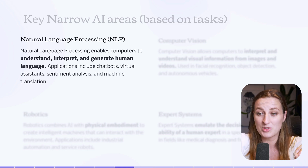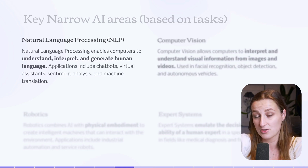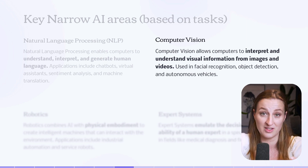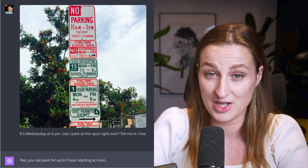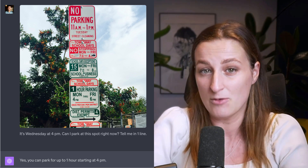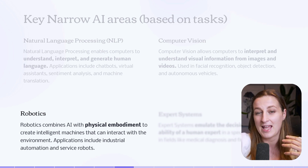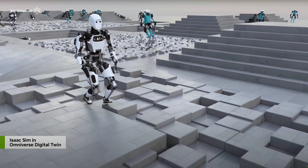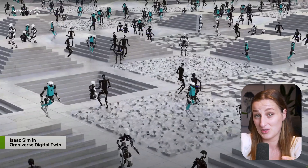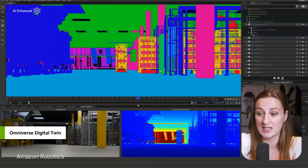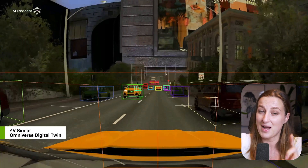We have multiple areas of narrow AI to look at from the perspective of a task. The most well-known is natural language processing, which enables computers to understand, interpret, and generate human language. Then we have computer vision — computers are able to interpret and understand visual information from images and videos. When you upload an image to ChatGPT and it can see what's in that image, that's computer vision.